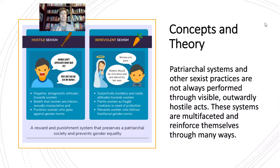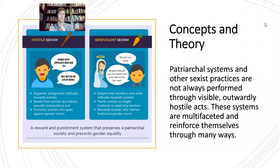Hostile sexism also punishes women who go against gender norms — what is sometimes called transgressing, literally crossing into practices reserved for masculine gender or the male sex. Punishing women for doing that negatively reinforces the binaries that divide men and women. Sometimes it's a little harder to see examples of benevolent sexism — practices we think are good and positive but are still dictated along lines of sex.